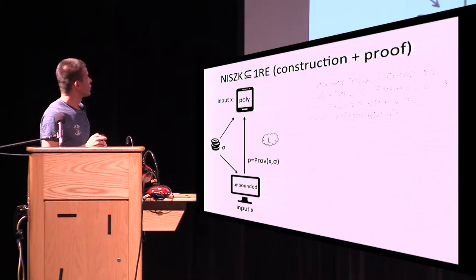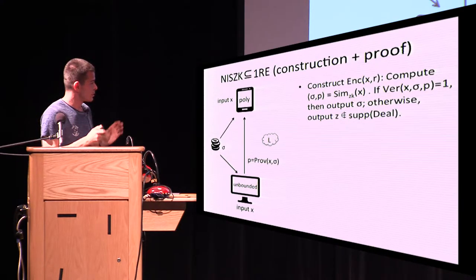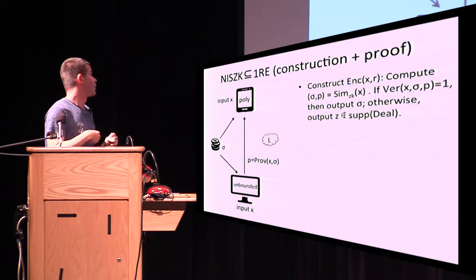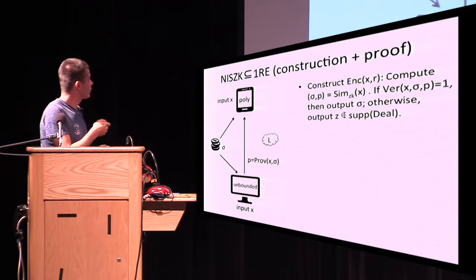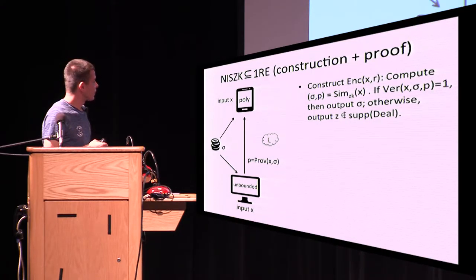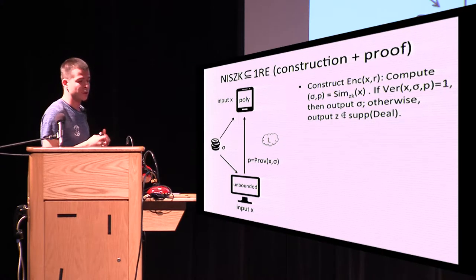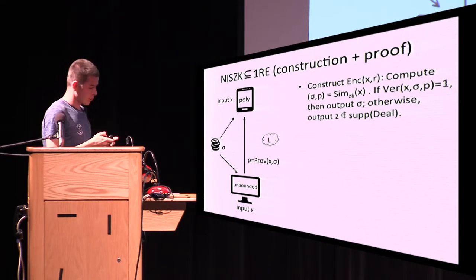The construction is based on known properties of NISC. The encoding procedure works as follows: first, you take the simulator of the zero-knowledge proof; given the input, the simulator outputs a string from the dealer and a proof — a distribution indistinguishable from the real world. You can then verify the common string and the proof against the input X. If verification succeeds, you output the common randomness string; otherwise you output some fixed string outside the support of the dealer.